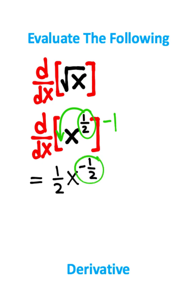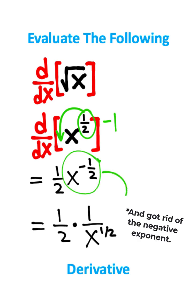Now since I have a negative exponent, that means I can write this entire expression as a reciprocal. I have one-half multiplied by one over x to the one-half power. I just took this expression and wrote it as a reciprocal.